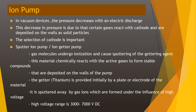In vacuum devices, the pressure decreases with an electric discharge. This decrease in pressure is due to certain gases reacting with the cathode and being deposited on the walls as solid particles — the selection of cathode is important. In the sputter ion pump, or getter ion pump, gas molecules undergo ionization and cause sputtering of the sputtering agent. This material chemically reacts with active gases to form stable compounds deposited on the pump walls. The getter material used is titanium, provided initially by a plate or electrode, then sputtered away by gas ions formed under high voltage of 3000 to 7000 volts DC.